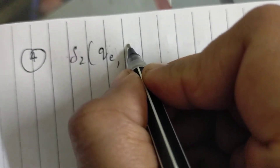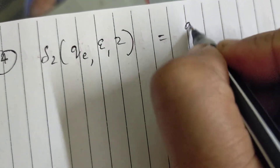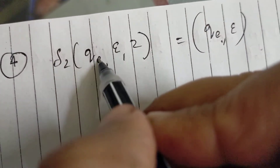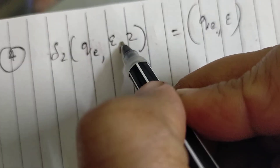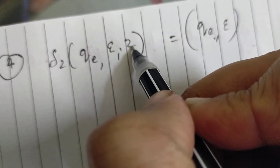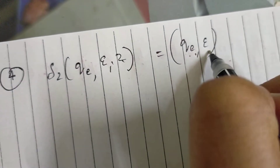Fourth step: when M2 is in state qe with no input — that is, input is empty — and whatever is on the top of the stack, it will again remain in qe, popping all the stack elements until the stack is empty.